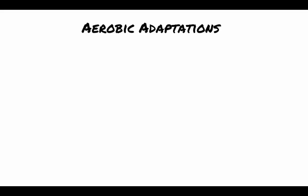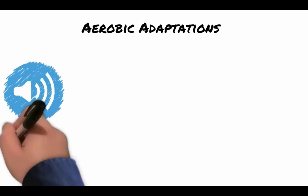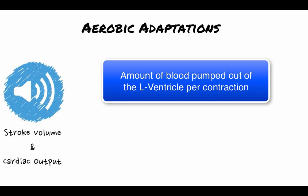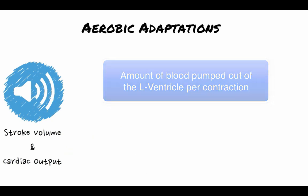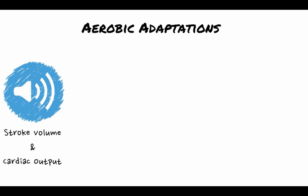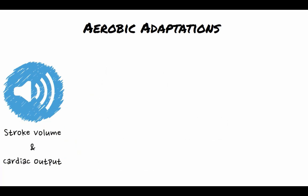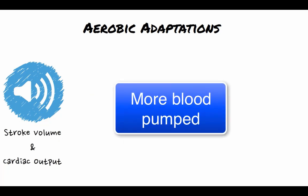Let's consider the aerobic adaptations. Stroke volume is the amount of blood pumped out of the left ventricle of the heart in a single contraction. Remember that this blood goes to the body. Training, especially aerobic training, will cause an increase in stroke volume. This is because the left ventricle increases in size, fills more efficiently, and contracts more forcefully. The result is more blood being pumped around the body per contraction.